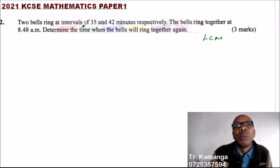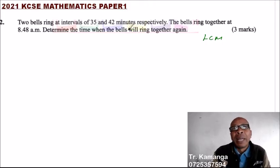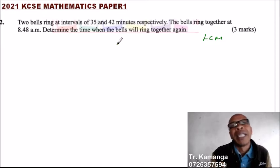The number which you multiply 35 by a certain number, you multiply 42 by a certain number, then you will be able to get the same product, the same value. That is what we mean by the LCM.